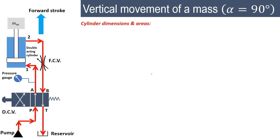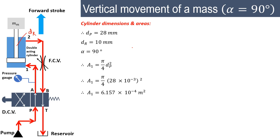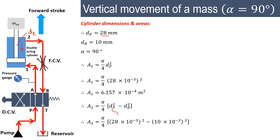With dp = 28 mm and piston rod diameter dr = 10 mm, and alpha = 90°, we calculate the areas. The piston area A1 = (π/4)·(28×10⁻³)² = 6.157×10⁻⁴ m². The effective piston area during the return stroke, A2, is obtained by subtracting the rod area: A2 = (π/4)·(dp² − dr²) = (π/4)·[(28×10⁻³)² − (10×10⁻³)²] = 5.372×10⁻⁴ m².